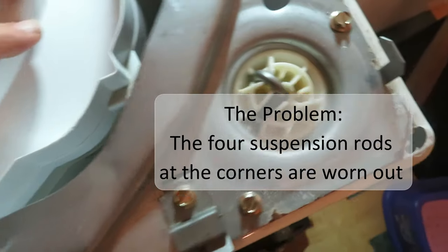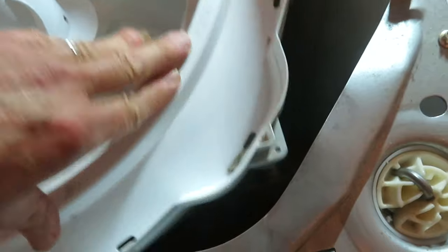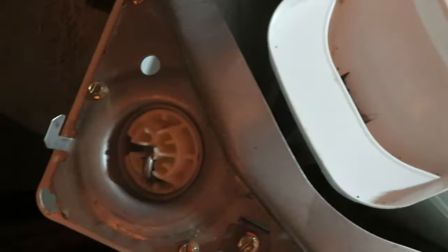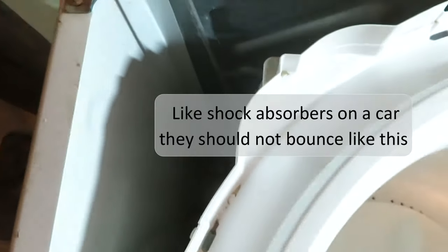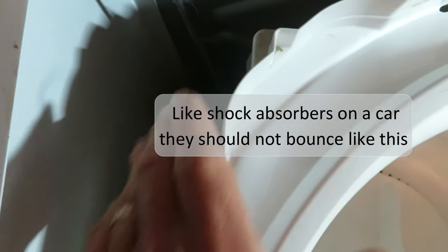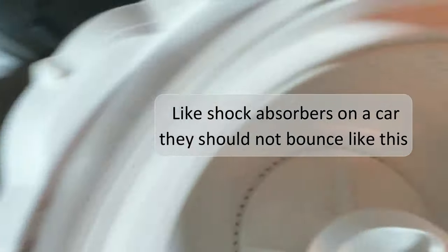The tub on this type of machine has suspension rods at each corner holding the tub, suspending the tub, and they wear out. Then you get a great deal of vibration. You can see here as I push these how they shake, pop up, back up and down like a shock absorber that's worn out on a car.